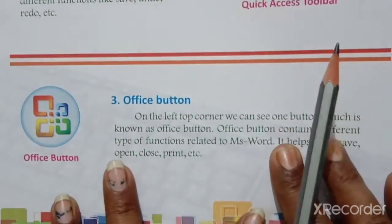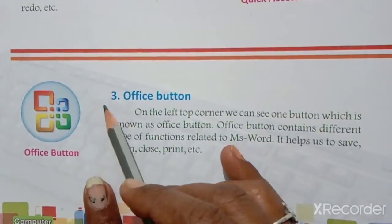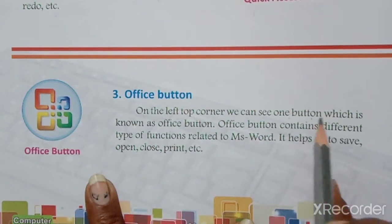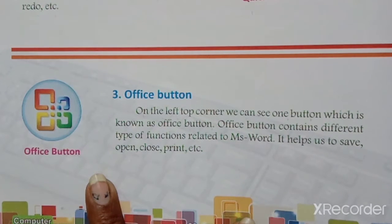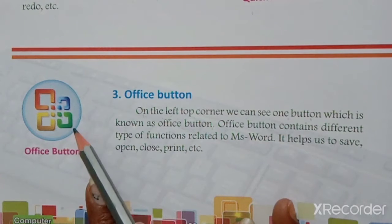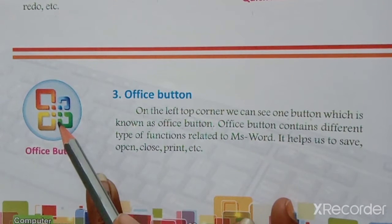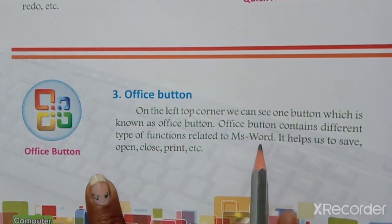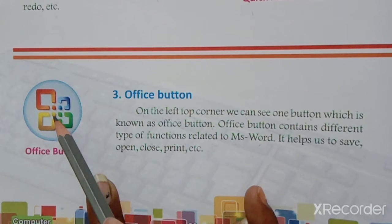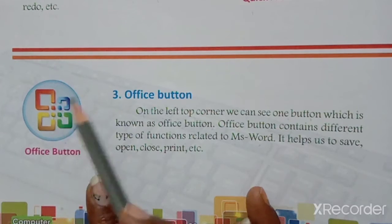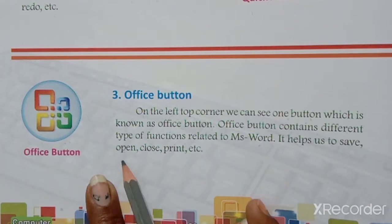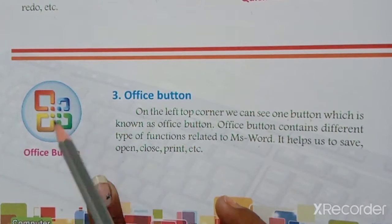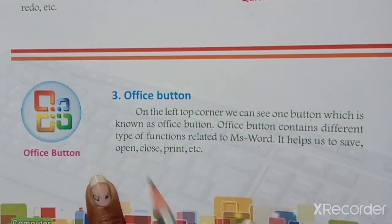Third is the Office Button. On the top left corner we can see one button which is known as the Office Button. The Office Button contains different types of functions related to MS Word. When you click it, you get different options. It helps us to Save, Open, Close, Print, etc. All these options are available in the Office Button.